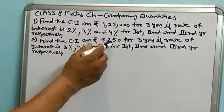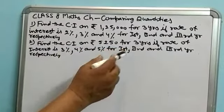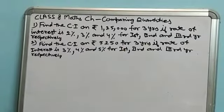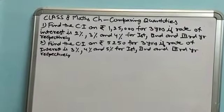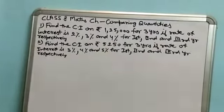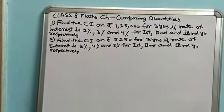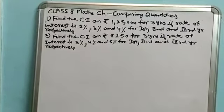Second question is find the compound interest on rupees 5250 for 3 years if the rate of interest is 3%, 4% and 5% for the 1st, 2nd and 3rd year respectively.